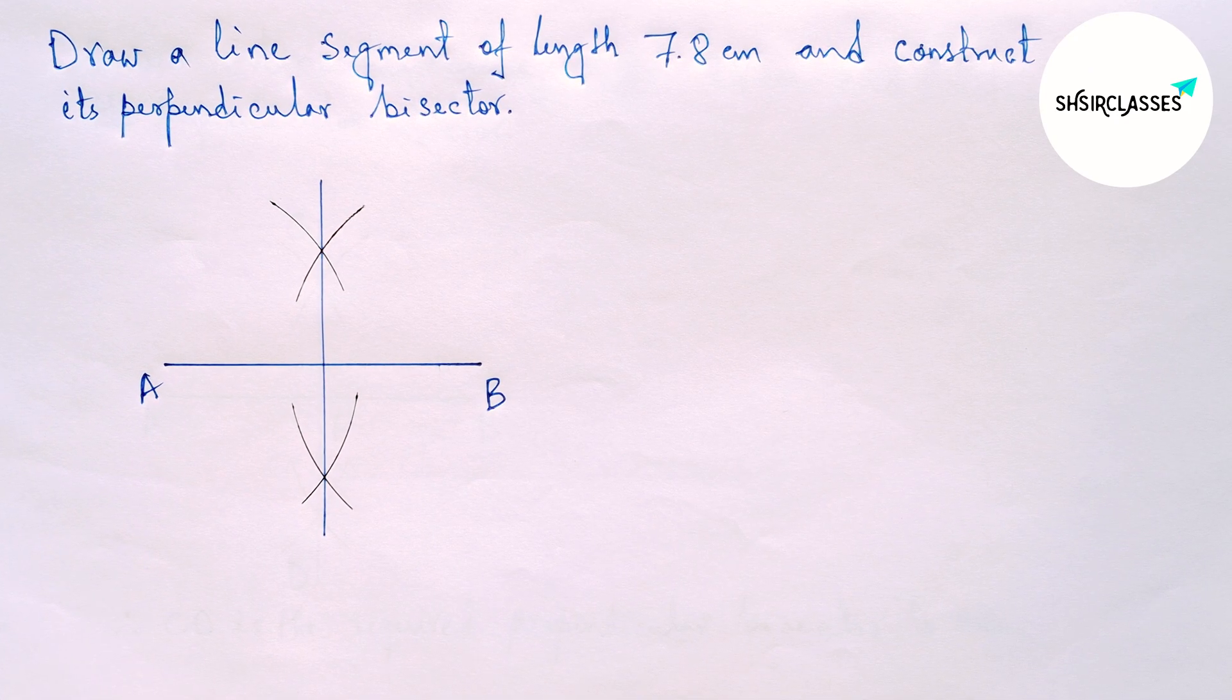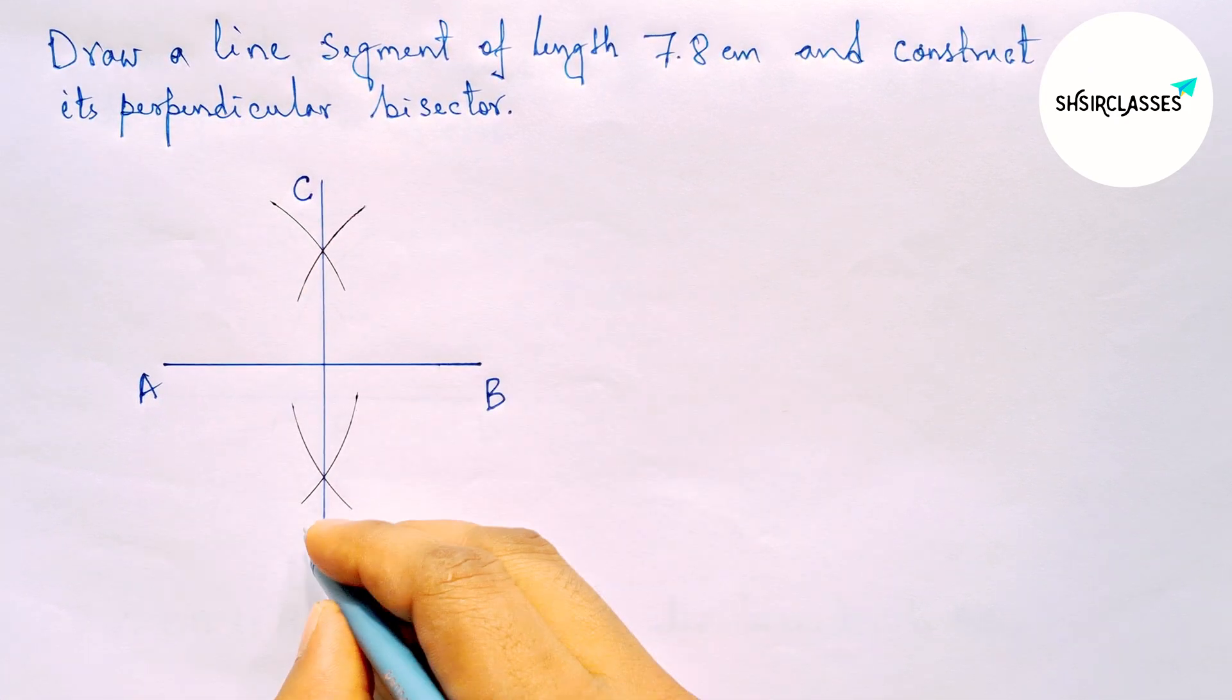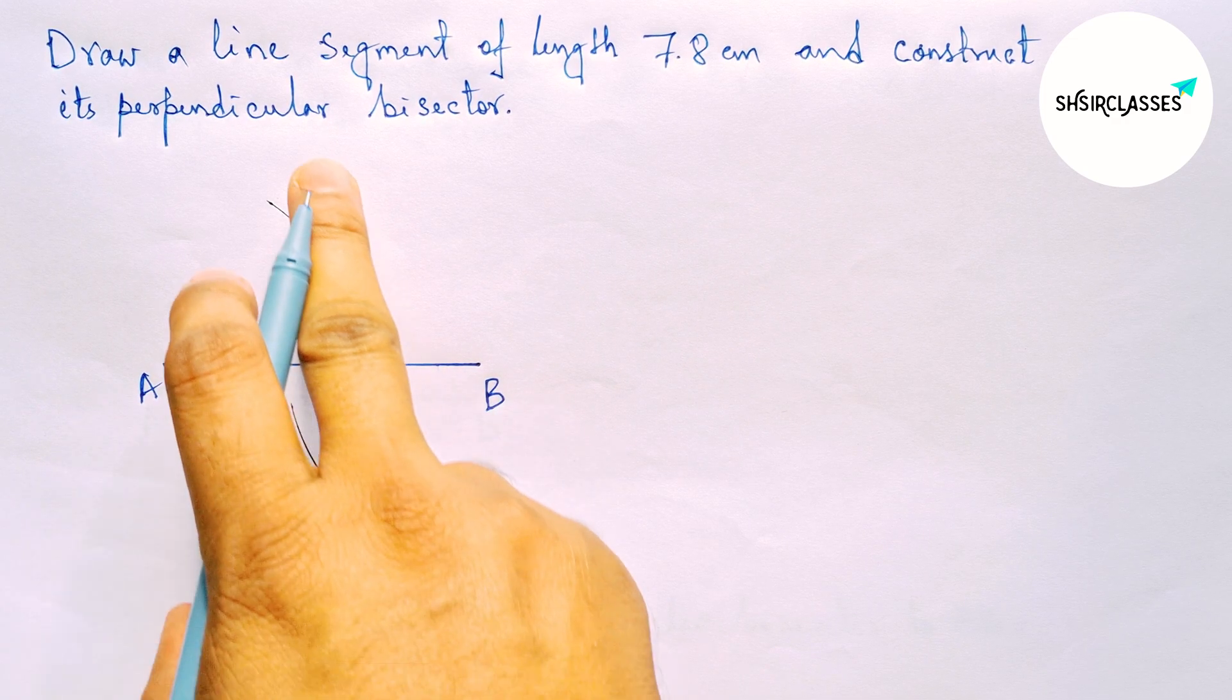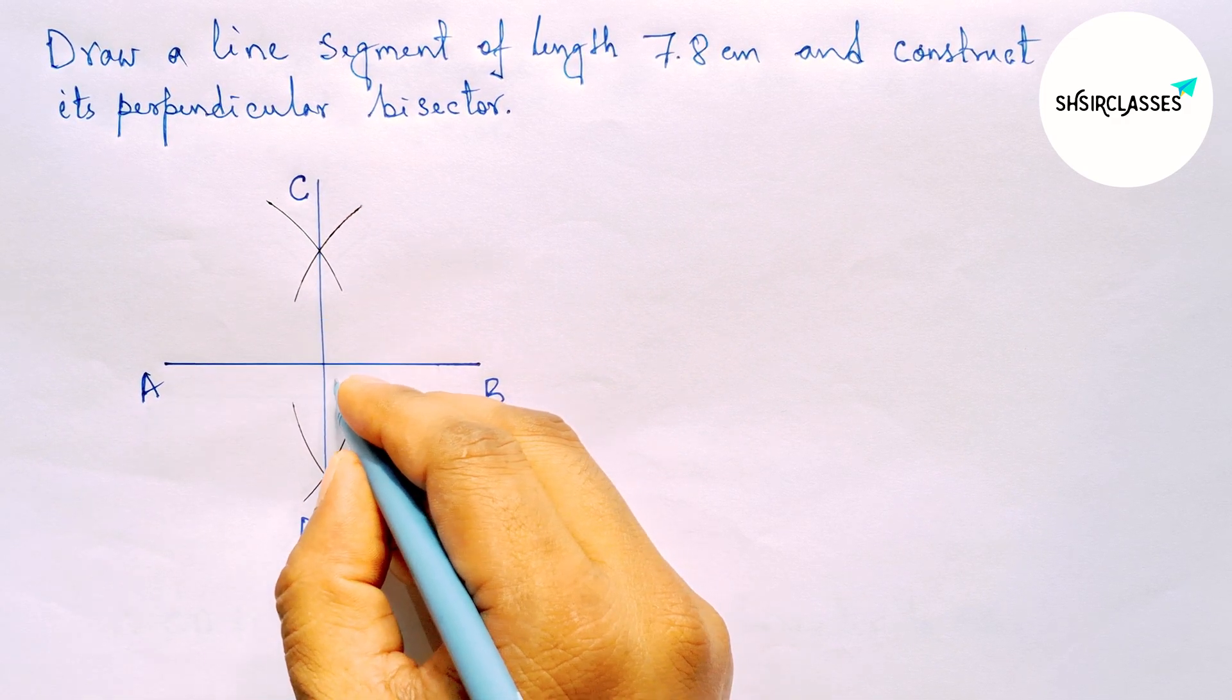So labeling here C and here D. AB and CD both intersect here at a point, so taking here point P.